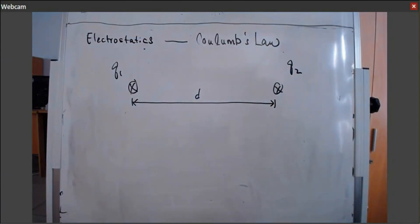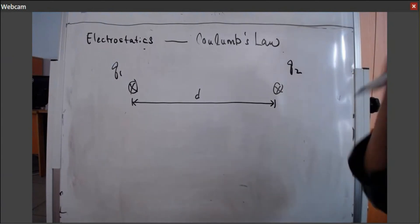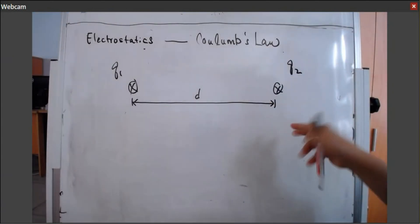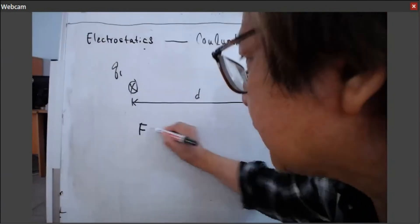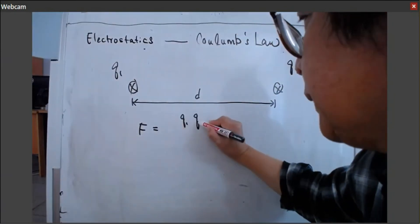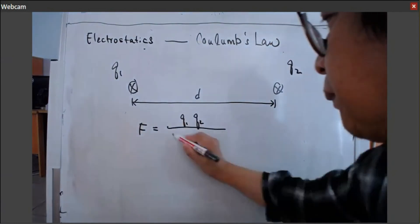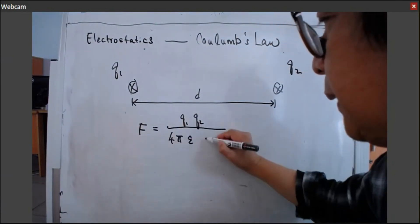So what is Coulomb's Law? By Coulomb's Law, the interaction force between them is given by Q1 times Q2, divided by 4 pi times epsilon, and then D squared.